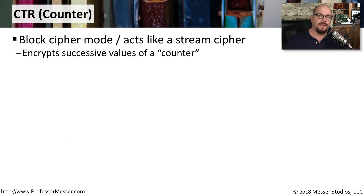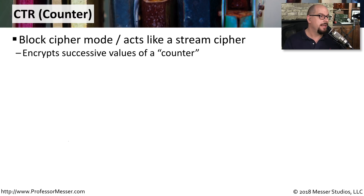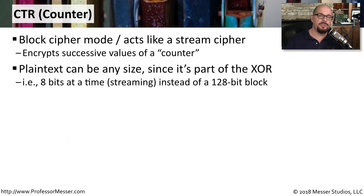With these previous modes of operation, there were fixed-size blocks. But what if you were streaming information and never had a full block's worth of data to encrypt at any particular time? For that type of encryption, we may want to use CTR mode, or Counter Mode. This is a block cipher mode that acts like a stream cipher, using a fixed-size counter that takes the place of the fixed block, allowing us to encrypt any particular size of information.